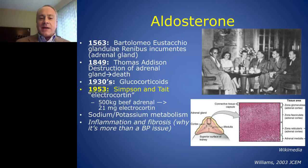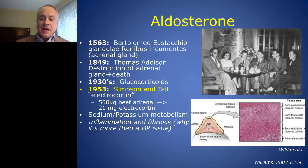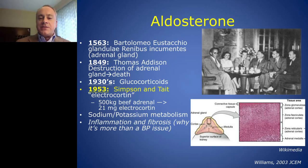Even back in the 1950s, it was identified that beyond blood pressure control and regulation of potassium, the mineralocorticoid aldosterone appeared to have influence in fibrosis and inflammation. The adrenal cortex has three layers — the zona glomerulosa, fasciculata, and reticularis — with the adrenal medulla below. The top layer, the zona glomerulosa, is where aldosterone secretion and production occurs.